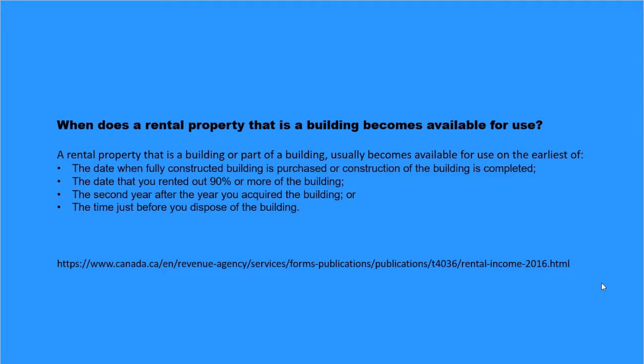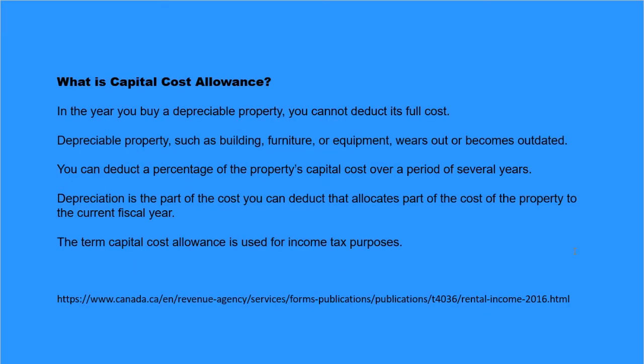When does a rental property that is a building become available for use? A rental property that is a building or part of a building usually becomes available for use on the earliest of: the date when a fully constructed building is purchased or construction is completed, the date that you rented out 90% or more of the building, the second year after the year you acquired the building, or the time just before you dispose of the building.